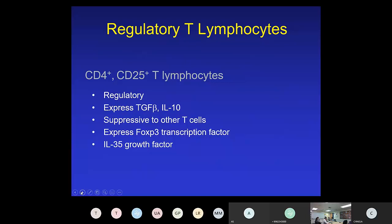Regulatory T-cells are specific for adaptive TH1 and TH2 T-cells and can regulate their expression, usually through TGF-beta and IL-10, making them suppressive to other T-cells. They use FOXP3 and a unique growth factor called interleukin-35. Regulatory T-cells are positive for CD4 and CD25, the IL-2 receptor, and utilize both IL-35 and IL-2 for their activation.